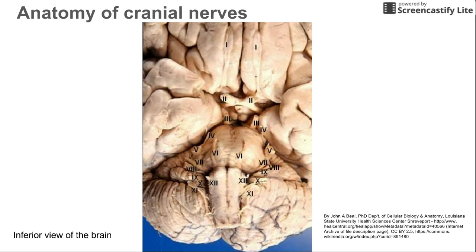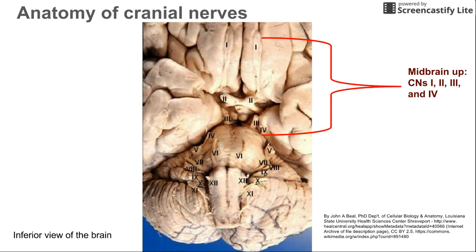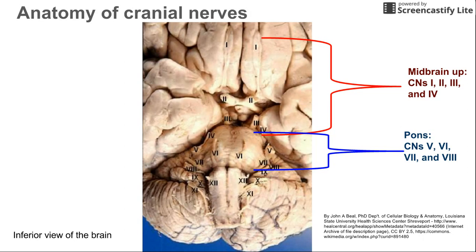It's easy to remember the cranial nerves if you think about their origins. The first four cranial nerves come from the midbrain and higher parts of the brain, like the diencephalon. The next four — cranial nerves five, six, seven, and eight — come from the pons. And the last four cranial nerves come from the medulla, or can best be seen in the medulla. Cranial nerve 11 really comes from the spinal cord but projects up into the medulla. So if you divide the 12 cranial nerves into three sections, they come from the three sections of the brainstem: the midbrain, the pons, and the medulla.